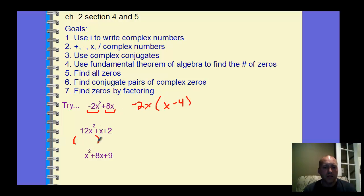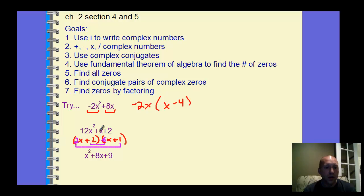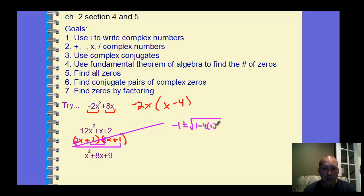The second one you can look to factor — you have the x and the x. Plus 2 and plus 1 are the only ways to get this 2 here. But if I look at all my combinations, none of them is going to give me an OI value that's 1, so it's not factorable. Then I go right to the quadratic formula: negative b plus or minus the square root of b squared minus 4 times a times c, all over 2a. And then I would simplify that.